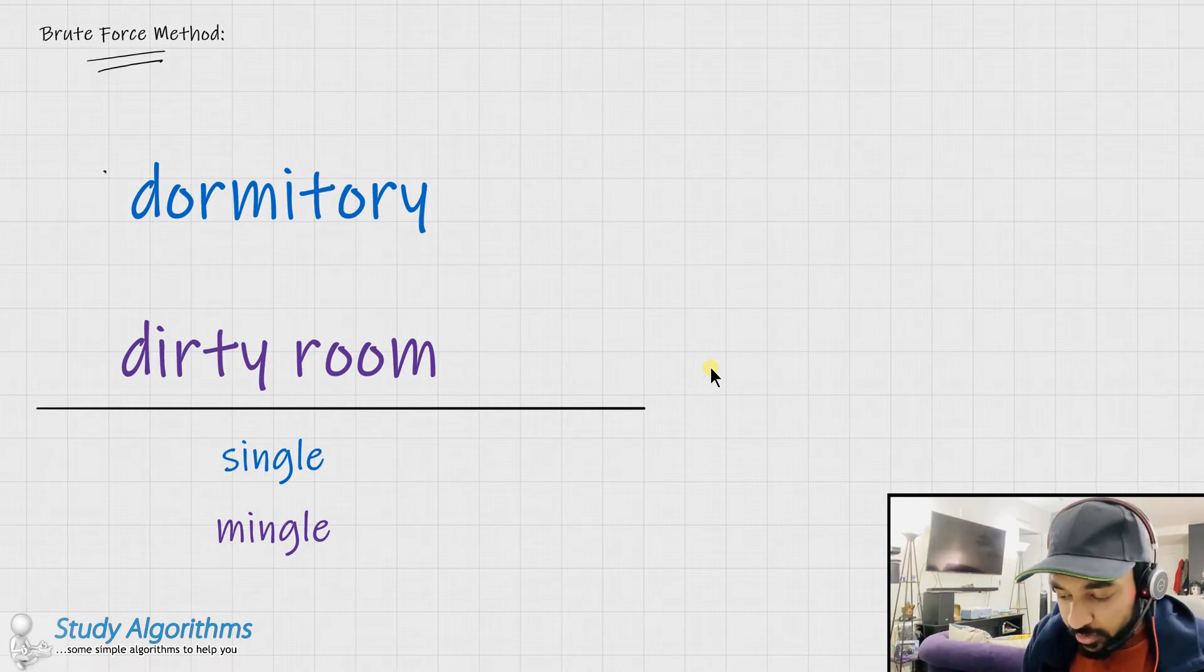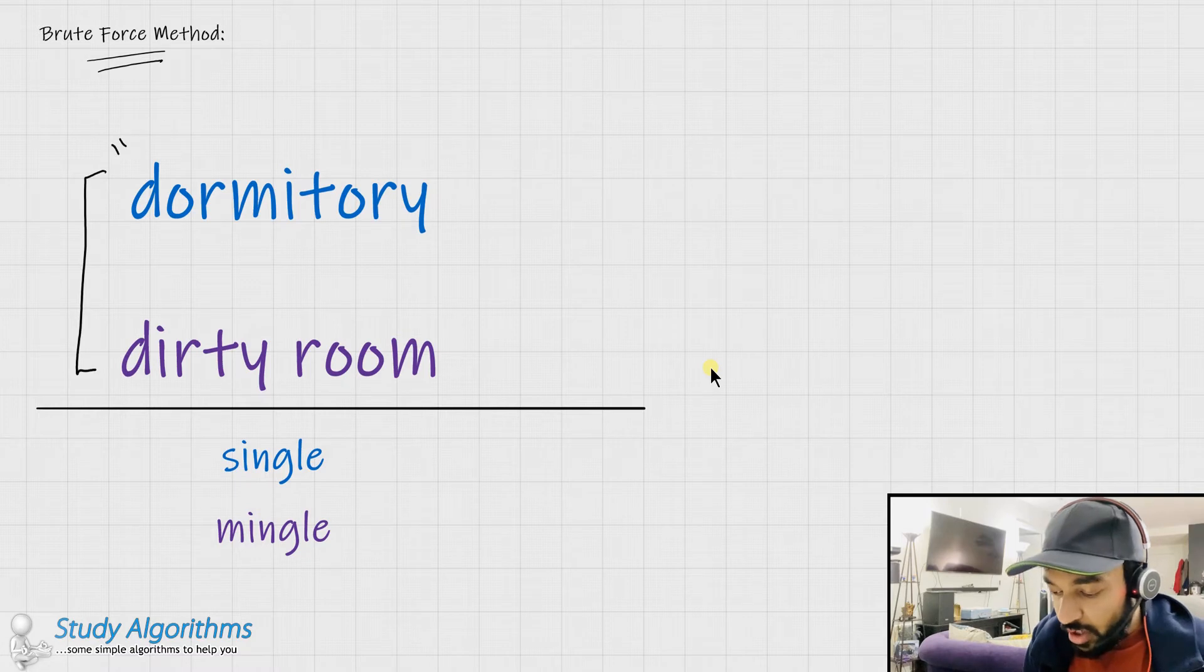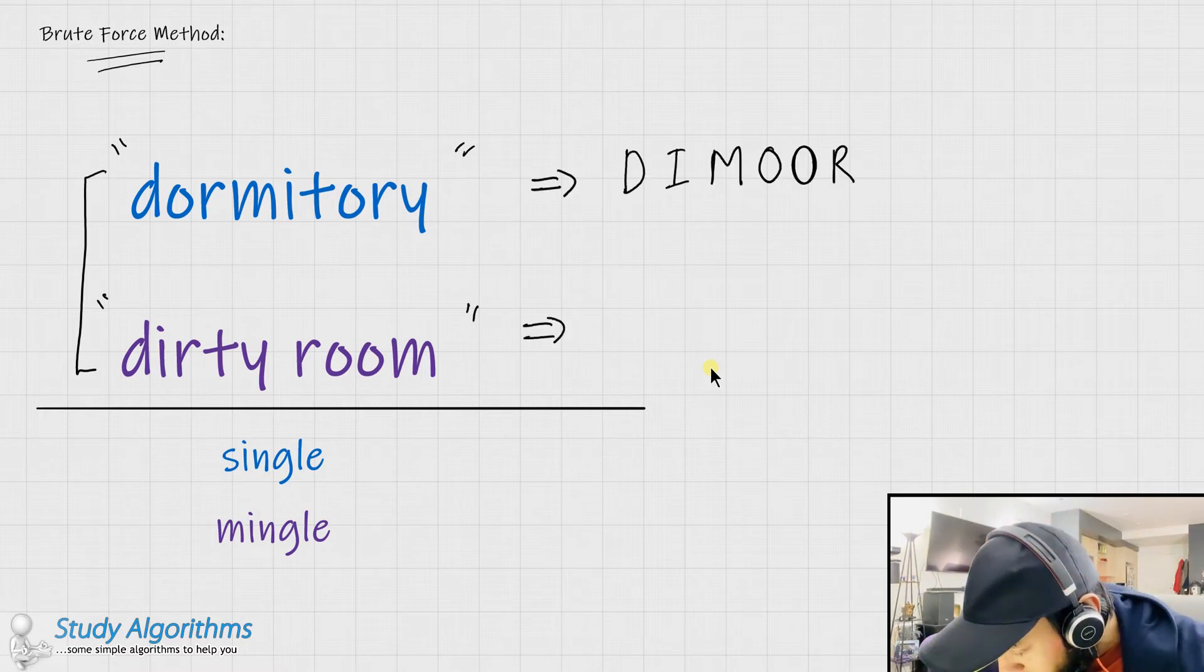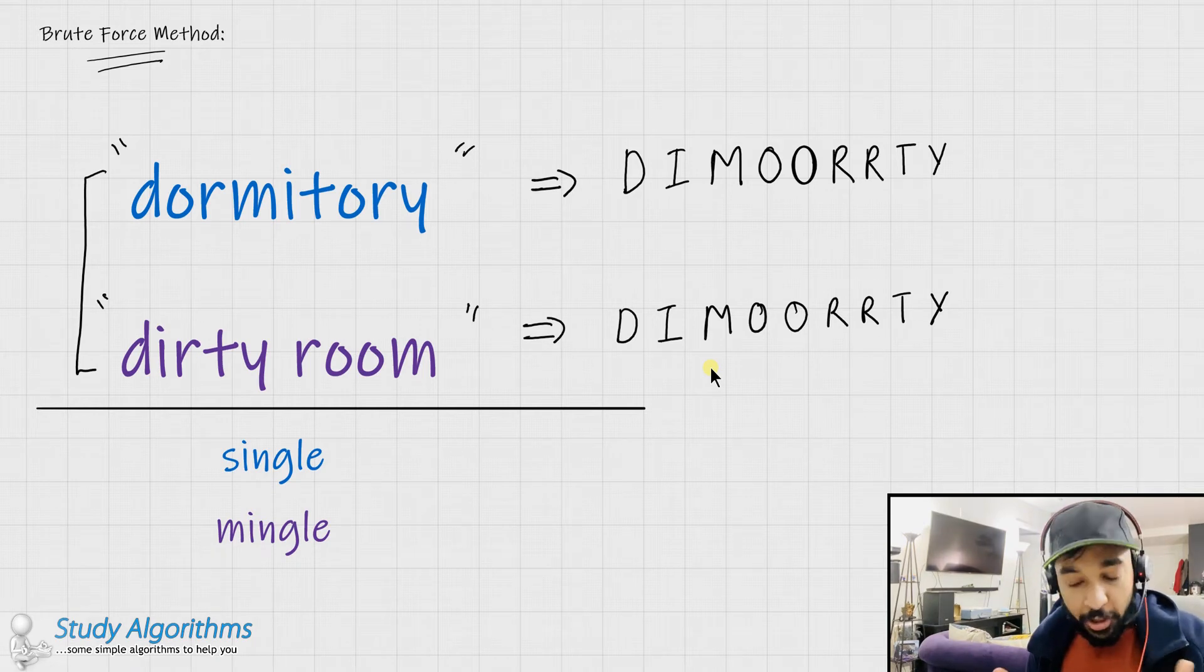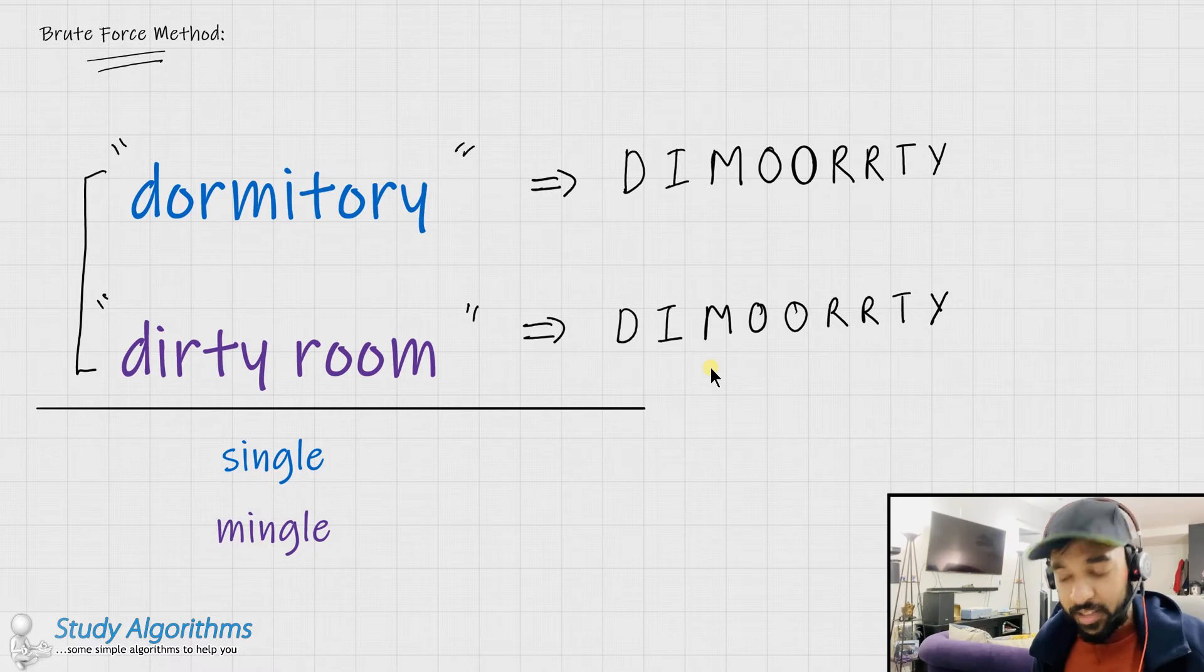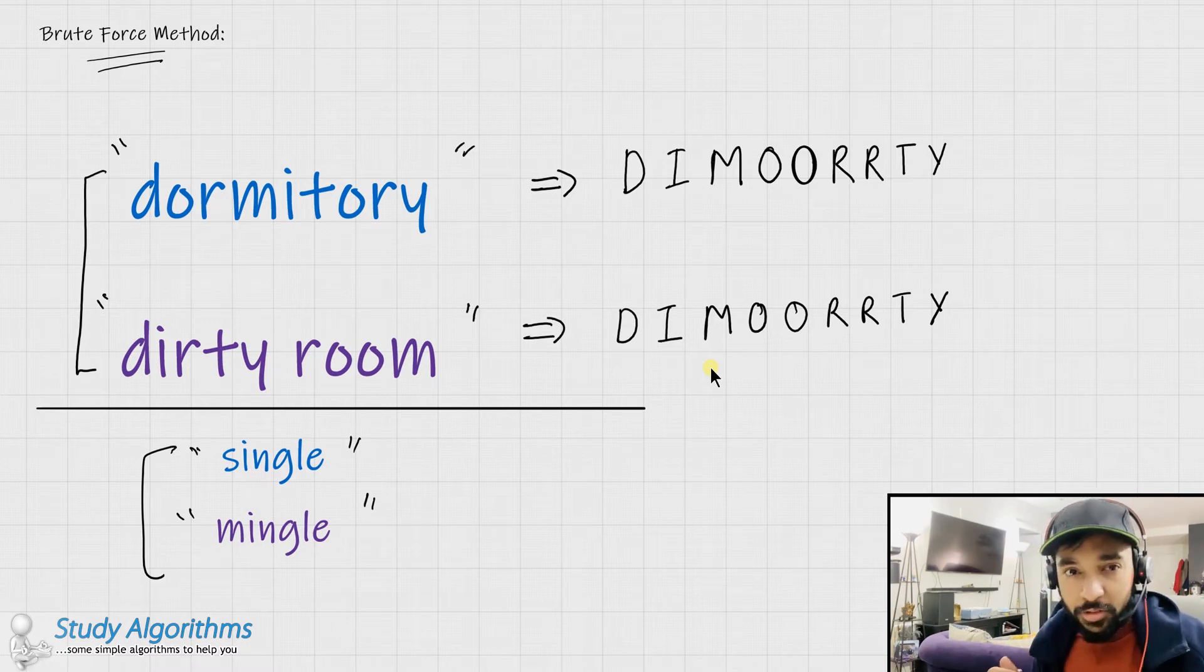Let us take up two examples. Example number one has two words, dormitory and dirty room. What happens when I sort both of them? We got this string that is same in both of the cases. But we know that these were anagrams. Let us take up another example that is single and mingle. You know that these strings are not anagrams because a character is different. What happens when I sort them?